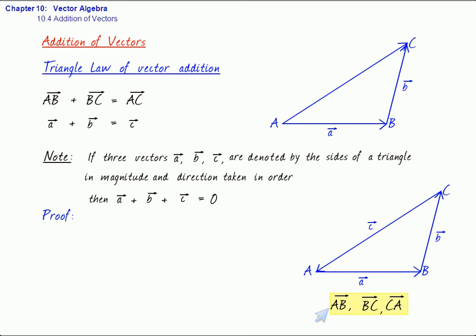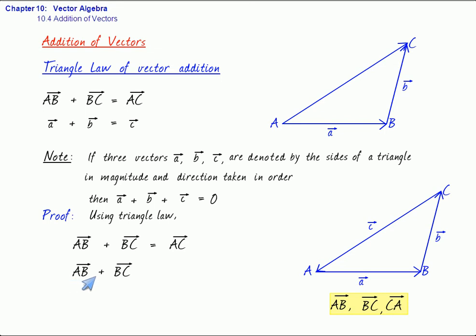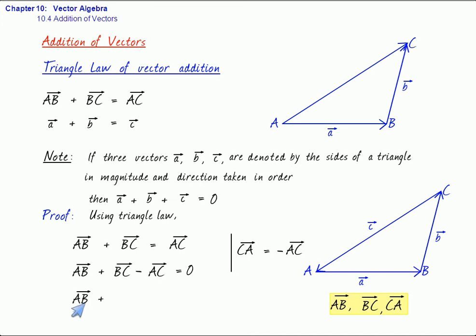How do you justify A plus B plus C equals zero? Using the triangle law, AB plus BC equals AC. Taking AC to the left gives AB plus BC minus AC equals zero. Now, remember that vector CA — if you change the order of terminal and initial point — can be written as minus AC. So minus AC may be replaced by plus CA. Therefore AB plus BC plus CA equals zero, or vector A plus vector B plus vector C equals zero.